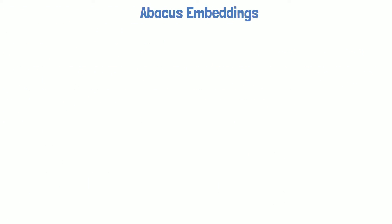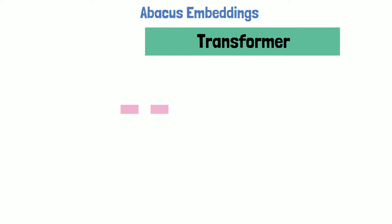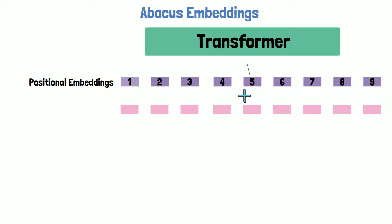This progress is achieved using a new type of positional embeddings called abacus embeddings. Say that we have a transformer we want to use and a sequence of tokens we want to feed into it. We do not just feed a sequence of tokens to the transformer, but rather we usually add positional embeddings to the token sequence, to inform the transformer about the position of each token in the input sequence.